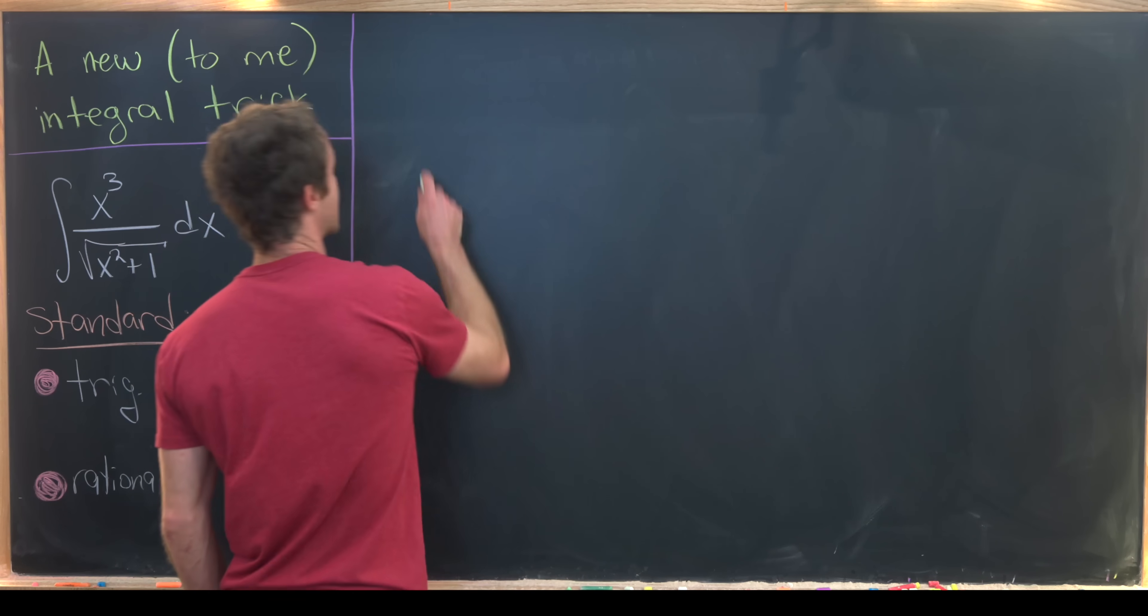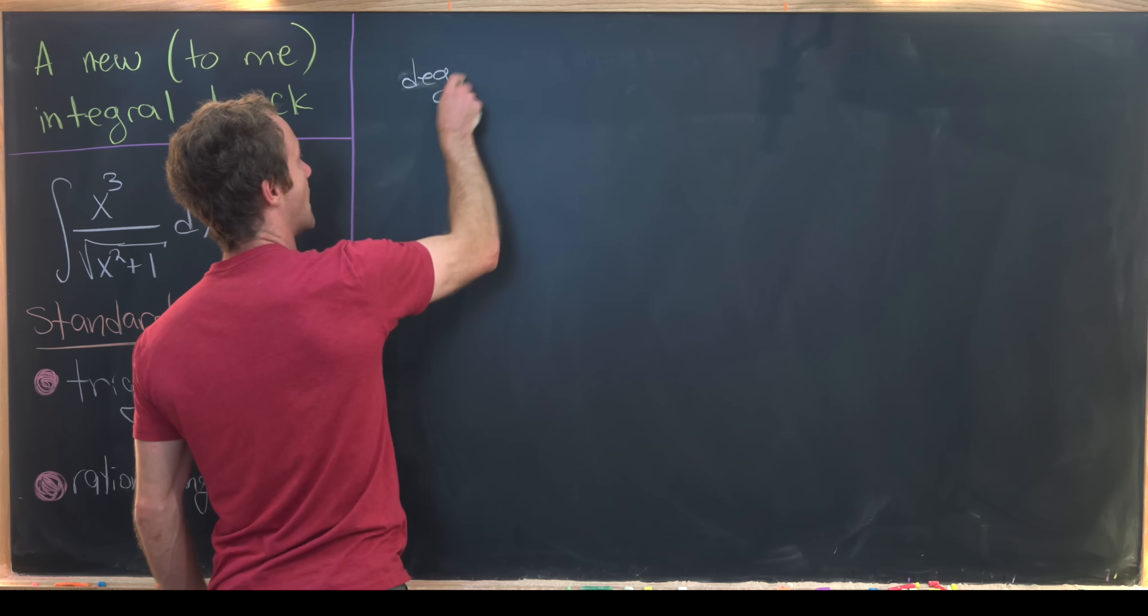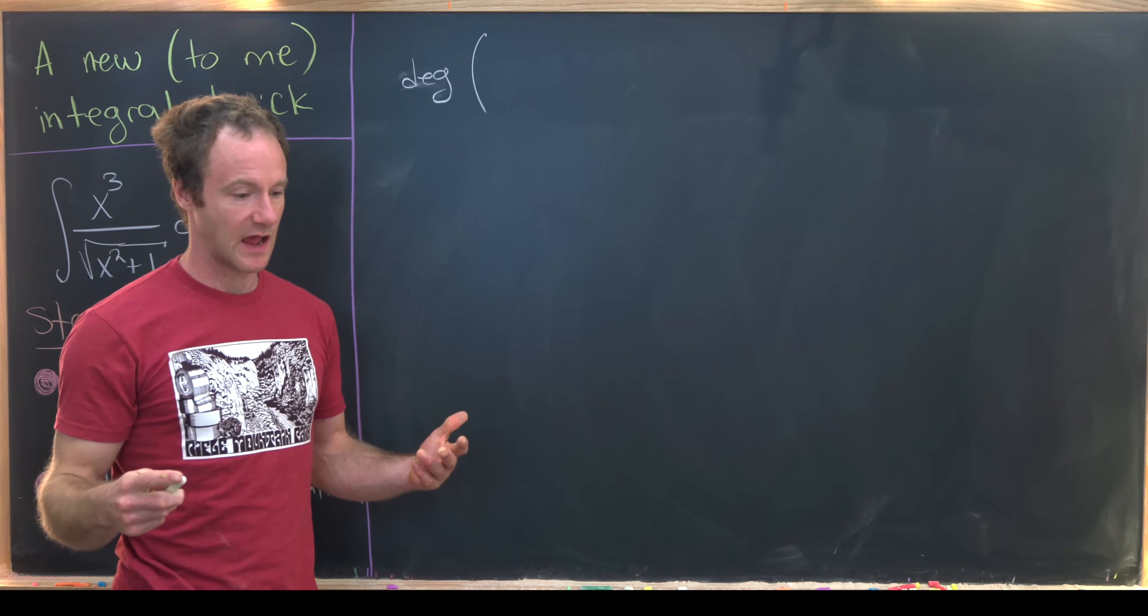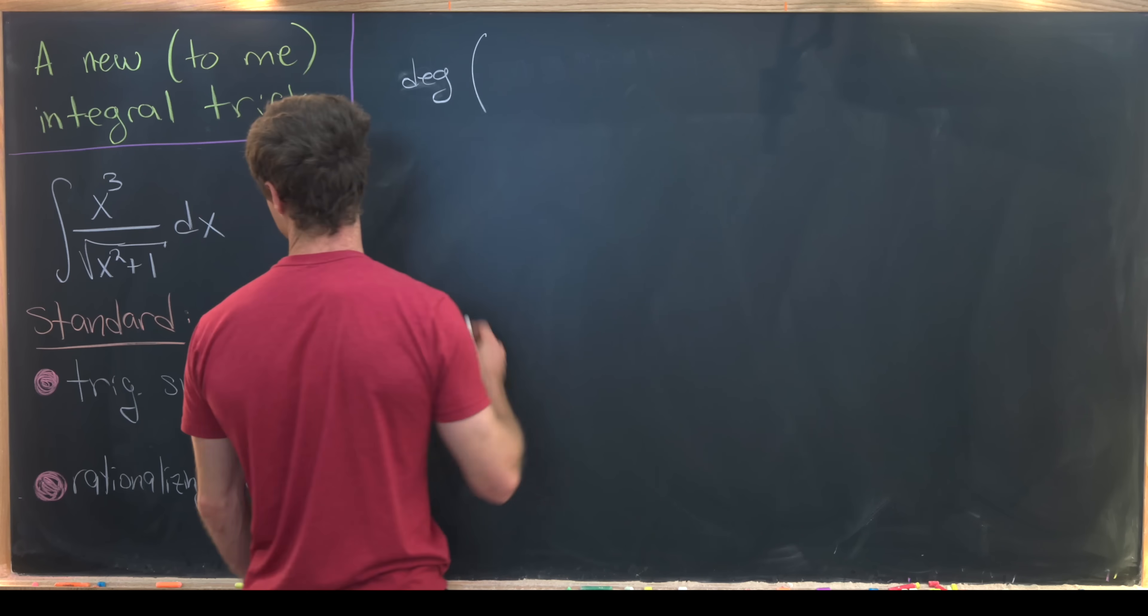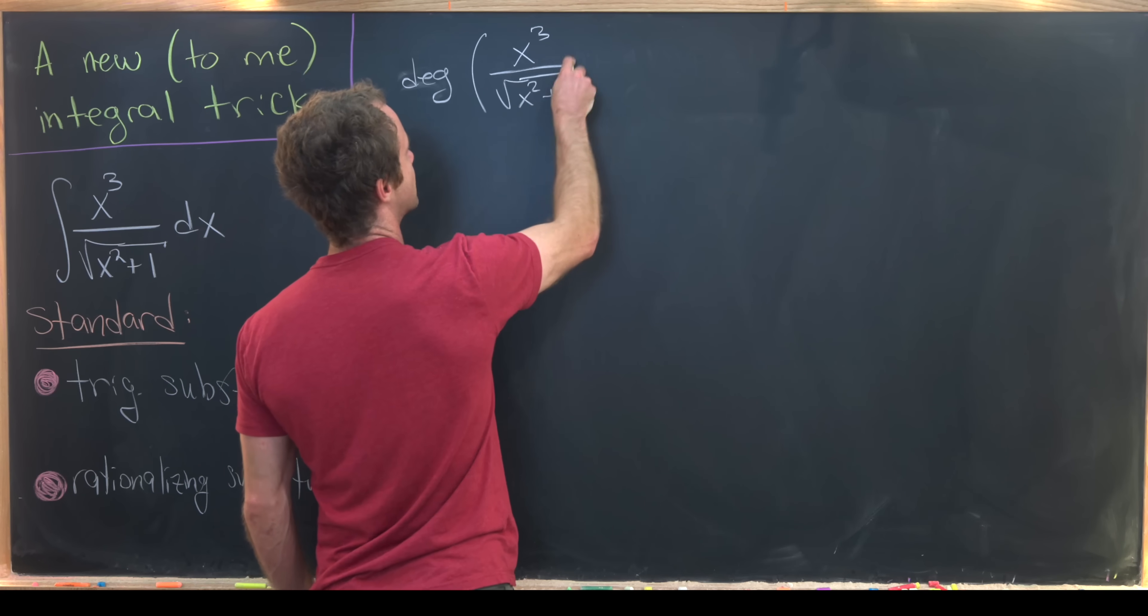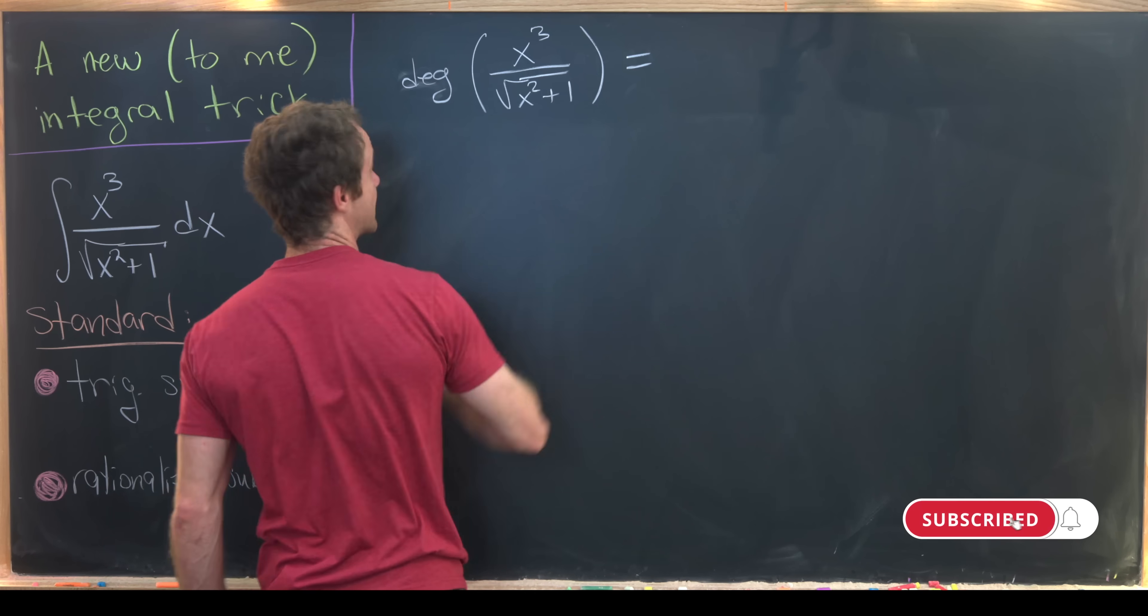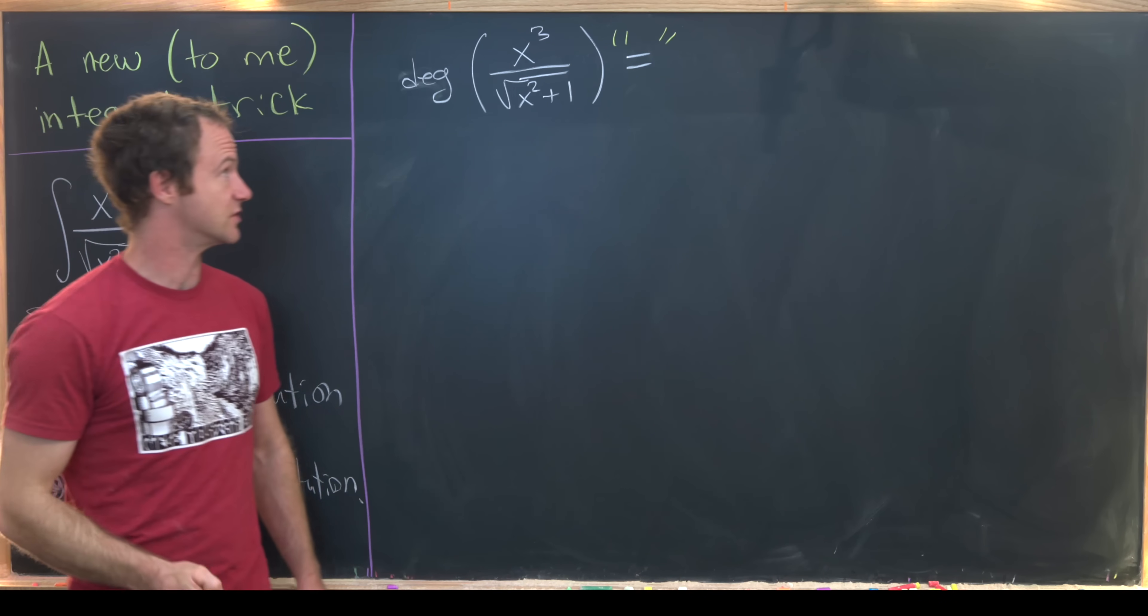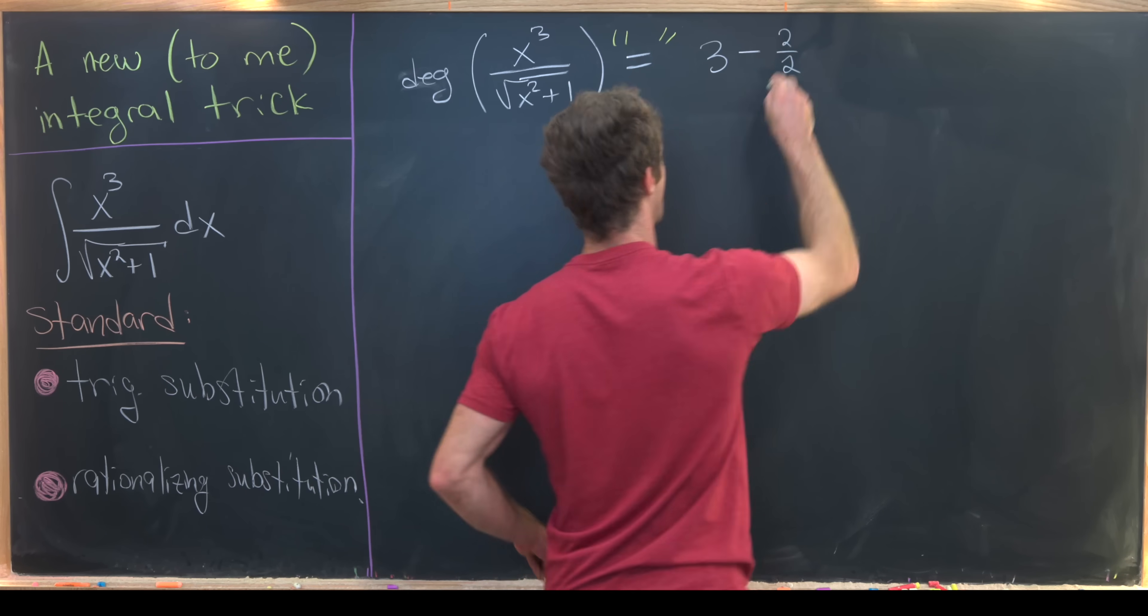So let's look at the integrand here and think about the degree of the integrand where we're thinking about it as maybe not being a polynomial because it's not a polynomial, but it's close to being a polynomial. So the degree of x cubed over the square root of x squared plus 1 is equal, and maybe I'll put this equal in quotes because this is really a loose idea of the degree.